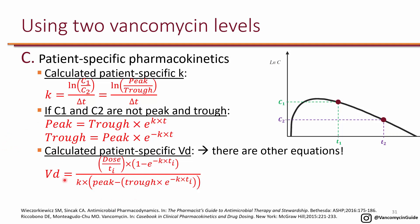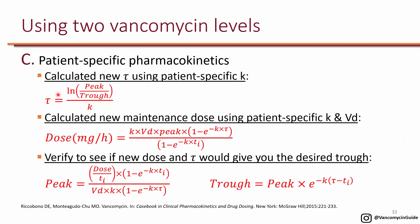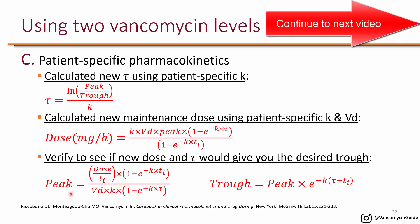Once you have the true peak and trough, use them to calculate the patient-specific volume of distribution — using the dose, time of infusion, the calculated K, and the actual or extrapolated peak and trough. That gives you a specific Vd. Then calculate the new tau and new dose. For the peak target, use 30 if the target trough is 10–15, and 40 if the target trough is 15–20. Once you have dose and frequency, verify that it would produce the target trough before recommending it.